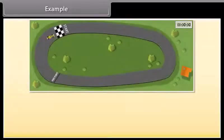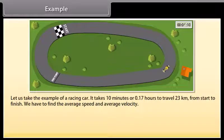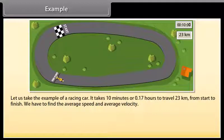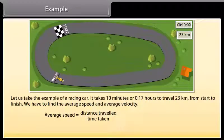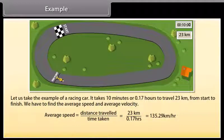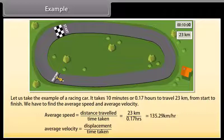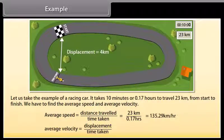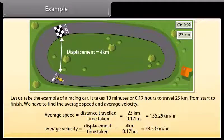Example. A racing car takes 10 minutes (0.17 hours) to travel 23 kilometers from start to finish. Average speed equals distance divided by time taken, so average speed equals 23 km divided by 0.17 hours, which equals 135.29 kilometers per hour. Average velocity equals displacement divided by time taken. The displacement is 4 kilometers, therefore average velocity equals 4 km divided by 0.17 hours, which equals 23.53 kilometers per hour.